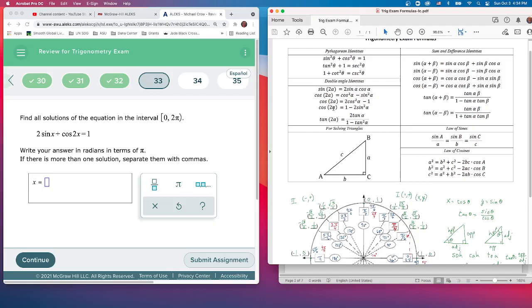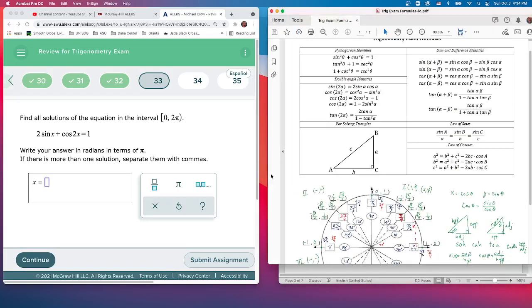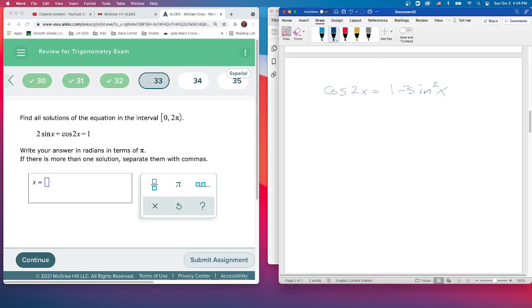We're going to use this one: cosine of 2X equals 1 minus 2 sine squared X. Let me write that down. Cosine of 2X is equal to 1 minus—let me check—2 times sine squared X.